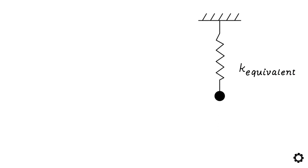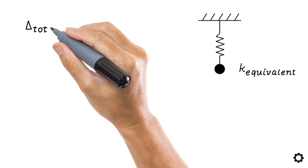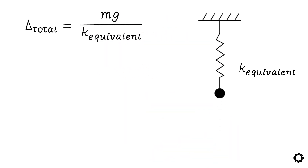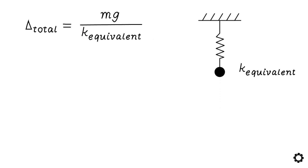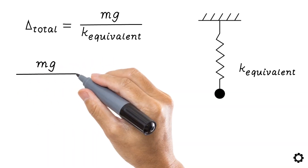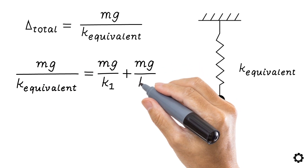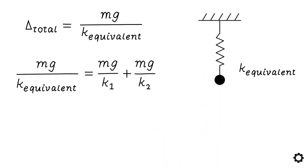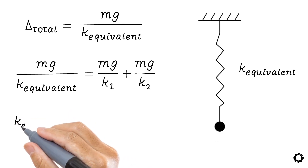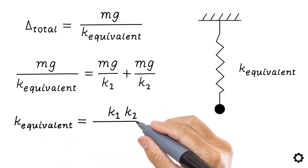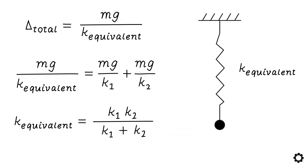As the main idea is to transform this complex system into an equivalent system, we can say that the total deflection delta total, described in terms of an equivalent system, is m times g divided by k equivalent. As the equivalent system is a representation of the series system, we set m times g divided by k equivalent equal to m times g divided by k1 plus m times g divided by k2. Factoring out the gravity forces and rearranging, the equivalent stiffness is: k equivalent equals k1 times k2 divided by k1 plus k2.